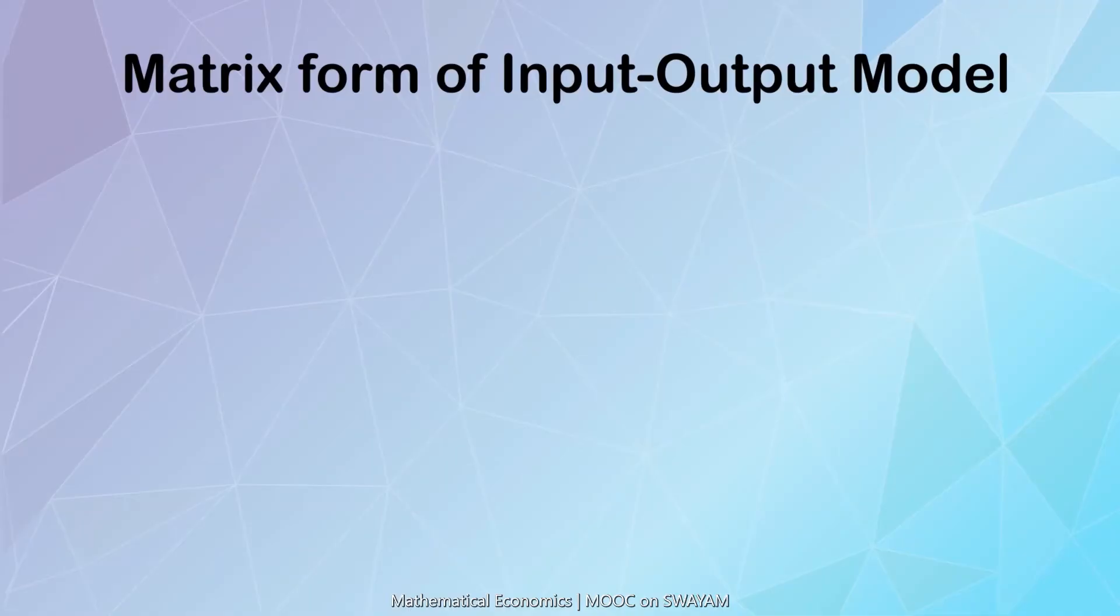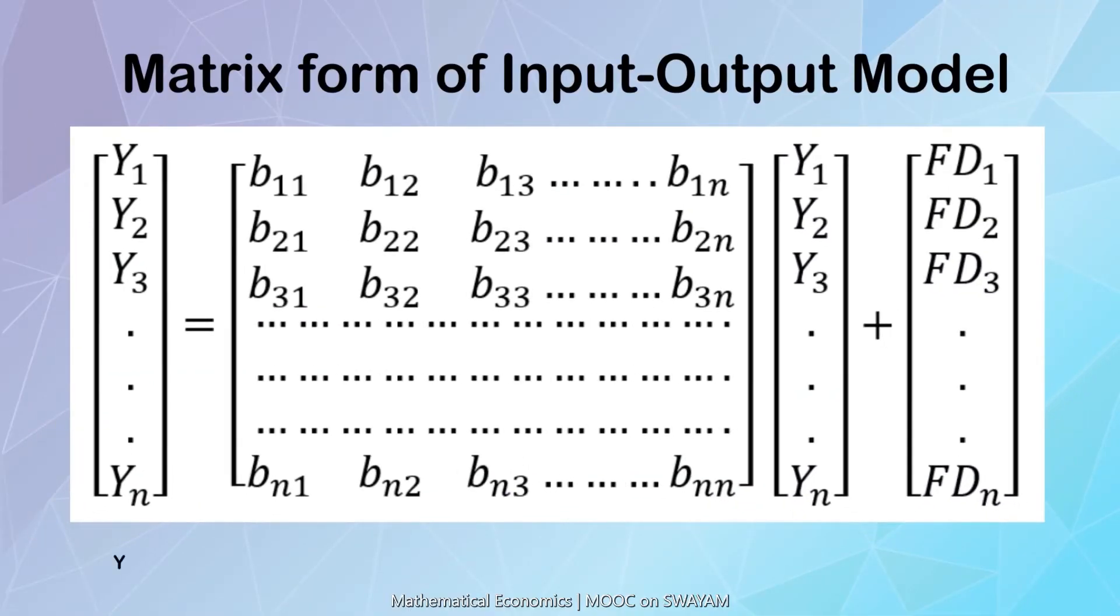Now, let us name the matrices Y, b, and D. Y is a column vector of outputs of order n by 1. b is a matrix of order n by n and is known as the coefficient matrix. D is a column vector of final demands of order n by 1.